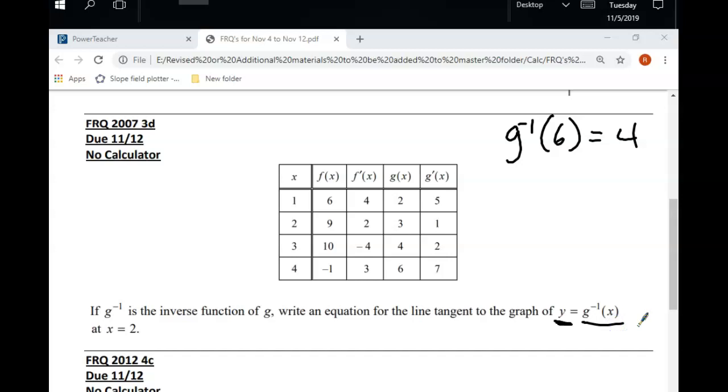So remember, with your tangent line, you need an x value. You need a y value. That's how you're going to find your y value. Now, how the heck are you going to find your slope? Well, a little while ago, I gave you guys a formula for the slope of an inverse function. If you have an inverse function, the slope, a.k.a. the derivative, at any point b is equal to 1 over g prime, not g inverse, but g prime of g inverse of b.